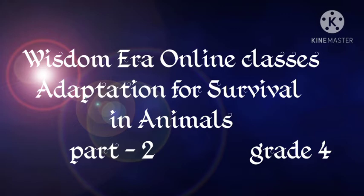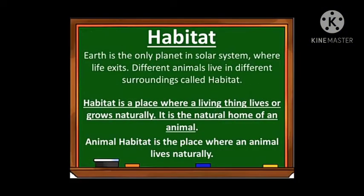We have studied how animals protect themselves from their enemies in our previous class. Now we shall study what are the things that animals have adopted to grow in different habitats. Earth is the only planet in the solar system where life exists. Different animals live in different surroundings called habitat. Habitat is a place where living things live or grow naturally — it is the natural home of an animal.